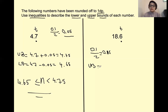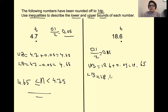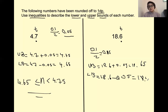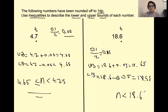For the upper bound we are going to do 18.6 plus 0.05, and the answer is going to be 18.65 — this is the upper bound. For the lower bound, it is 18.6 take away 0.05, and the answer is going to be 18.55. Now when you write the inequality, numbers should be smaller than 18.65 and greater than or equal to the lower bound, which is 18.55.